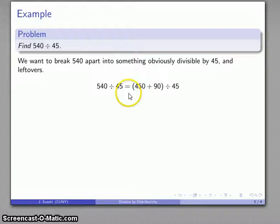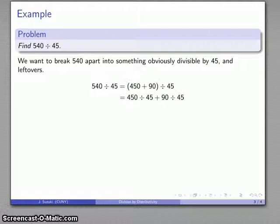For example, I might take this 540, and if I break that into 450 plus 90, well, that is easy to divide by 45. And I do have this 90 that's left over, so I'll have to think about what 90 divided by 45 is. But at the very least, I can rewrite my division this way, and I now have a really easy part: 450 divided by 45, that's just going to be 10. And 90 divided by 45...